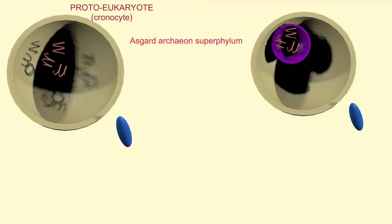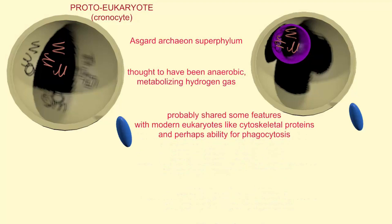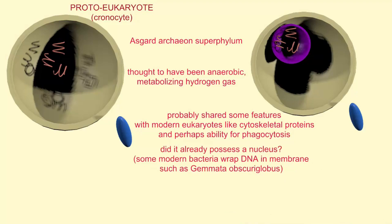Might this be a precursor to endosymbiosis? Thus, evidence at present suggests that the proto-eukaryotic cell was an archaeal prokaryote in the Asgard superphylum. Given the characteristics of this group, it is thought to have been anaerobic, metabolizing hydrogen gas, and probably shared some features with modern eukaryotes like cytoskeleton proteins.